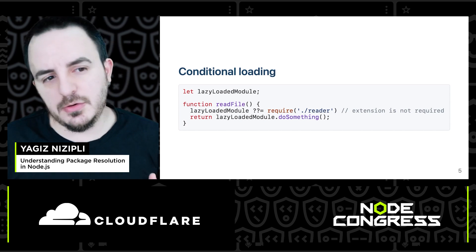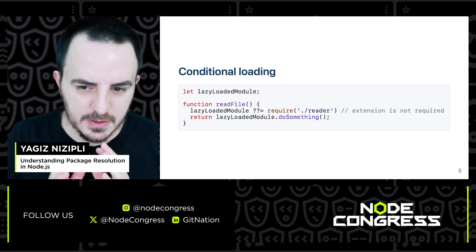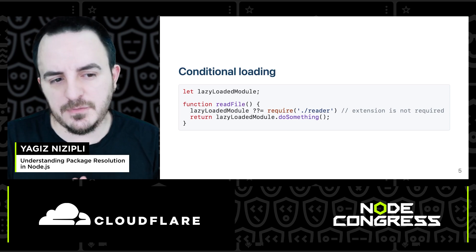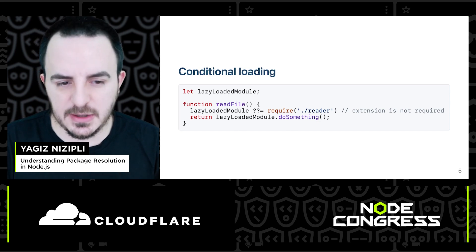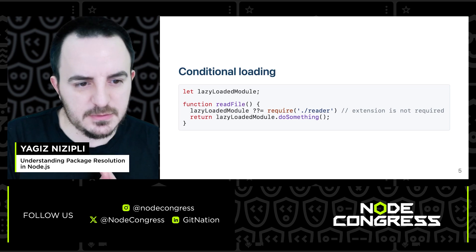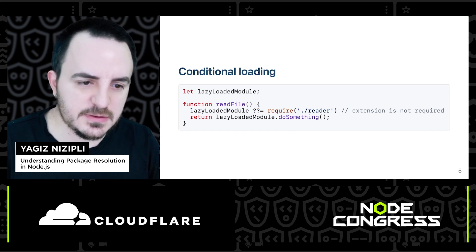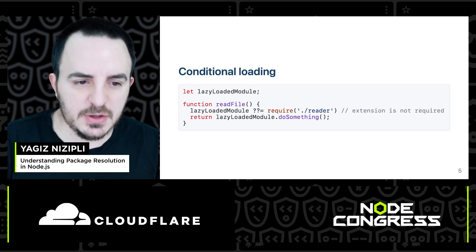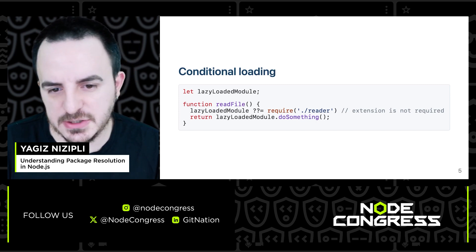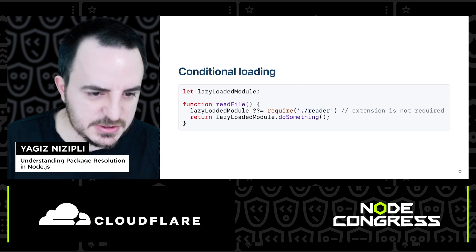If you want to do conditional loading — say you have a function called readFile and you want to load a file only when that function executes — you use require inside the function. The caveat is that the lazy-loaded module assignment using require will block execution because this is a synchronous call, blocking I/O depending on the size of the file. As you can see, the extension is not required (e.g., './reader'). The loader first checks for the .js extension, then .json, and so on.